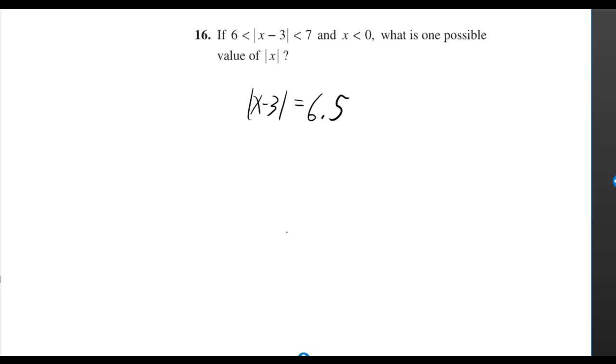If the absolute value of x minus 3 is between 6 and 7 and x is negative, what is one possible value of the absolute value of x? If we make the absolute value of x minus 3 equal to 6.5, then that's in between 6 and 7.